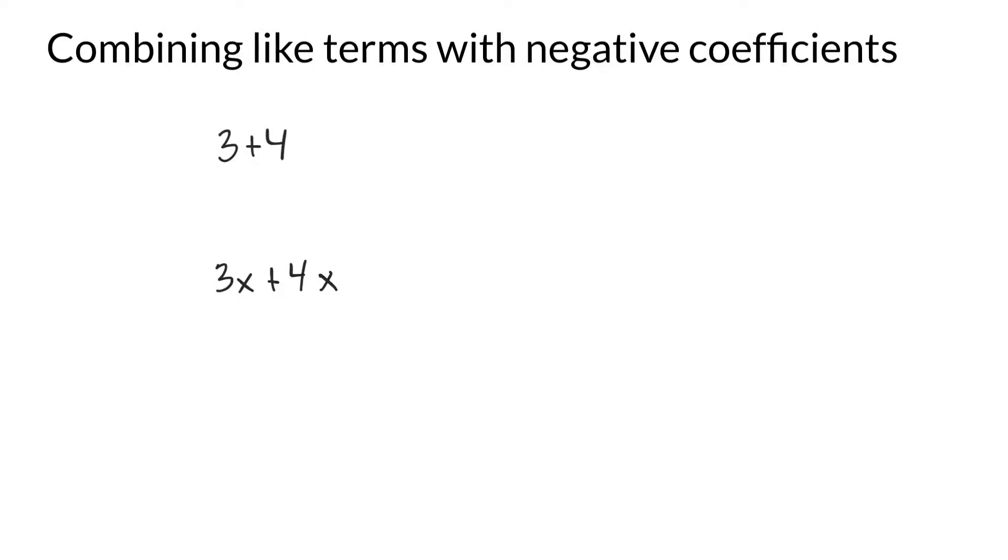You're going to learn now about combining like terms with negative coefficients. Let me start with a simple expression like 3 plus 4. We know that 3 plus 4 is 7. That's super easy.